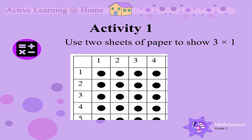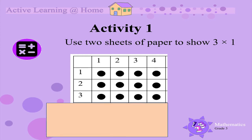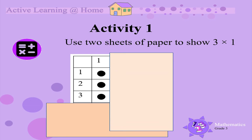Use your two sheets of paper to show three times one. Do this now. Cover everything below the row labelled three and cover everything to the right of the column labelled one. So three times one is three.